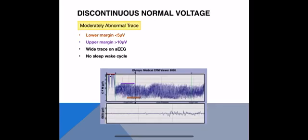This trace shows discontinuous normal voltage, which is moderately abnormal. Although the upper margin is greater than 10 — again the purple line — the lower margin is less than 5, so it has dropped down and the trace has a much wider appearance. Also note that there is no real presence of sleep-wake cycling; the trace is much broader and wider throughout.